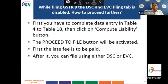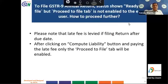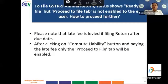Certain technical issues were reported: while filing GSTR 9, the DSC and EVC filing tab is disabled. First, complete data entry in Tables 4 to 18 of GSTR 9, then click the compute liability button — after this, the proceed to file button will be activated. Pay the late fee if applicable, and then file using either DSC or EVC. If the return status shows ready to file but the proceed to file tab is not enabled, note that late fee is payable after the due date — only after clicking compute liability and paying the late fee will the proceed to file tab be enabled.